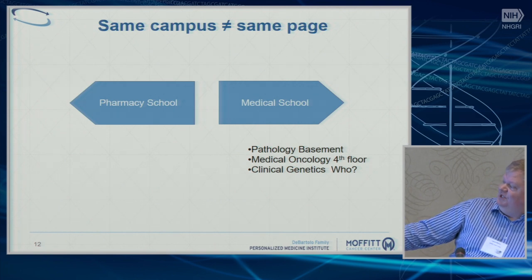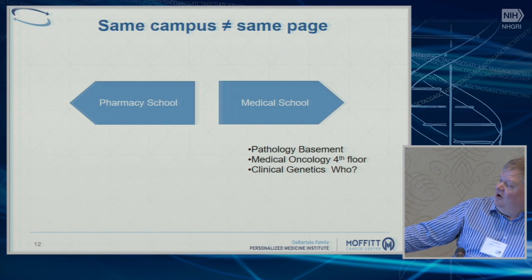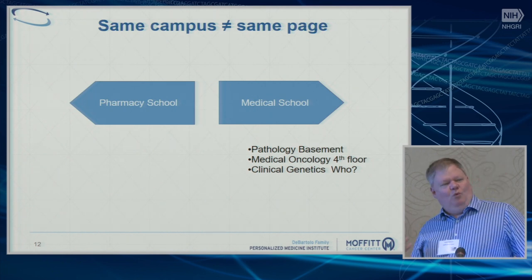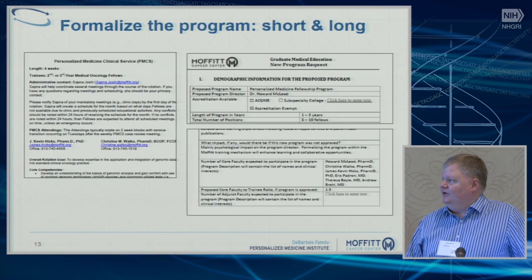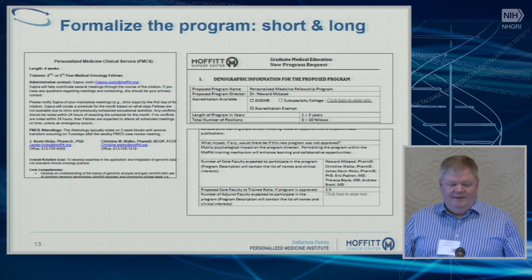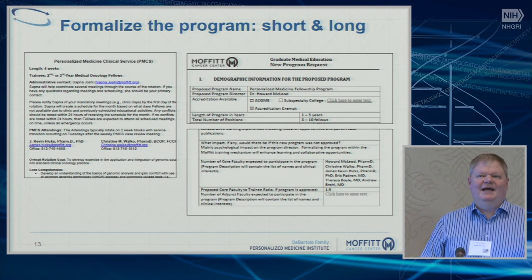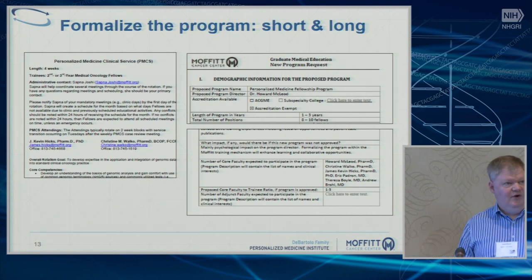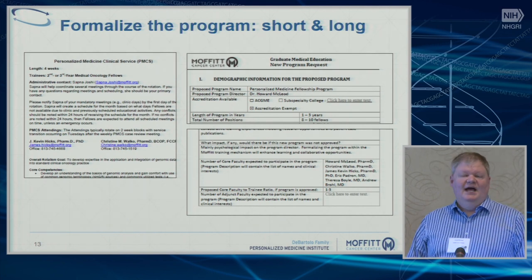People may be on the same campus but not on the same page. On a major medical campus, you've got a pharmacy school and a medical school that may or may not interact. Within the medical school, you've got pathologists in the basement, medical oncology on the fourth floor, and clinical genetics — not sure genetics is even in the building. They're not necessarily working together. So we designed a plus-one program: if someone has already done training in medical oncology, pathology, or clinical pharmacy, they can do one extra year — up to three extra years — getting both clinical and research training.